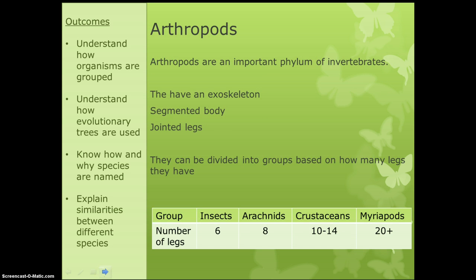There is one group you need to know a little bit more about, and that is the arthropods. Arthropods are a phylum of animal and we can identify them because they have an exoskeleton, segmented body, and jointed legs. They are then split into groups based on how many legs they have: insects have six legs, arachnids (so spiders) have eight, crustaceans have 10 to 14, and myriapods have more than 20. A common exam question might show you a picture of an insect and you have to decide which group it belongs to.